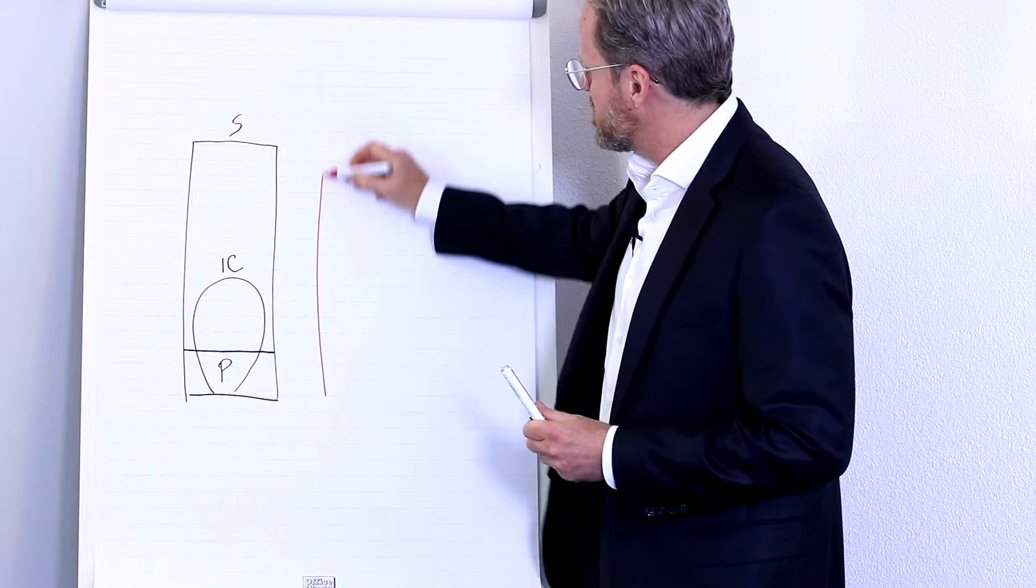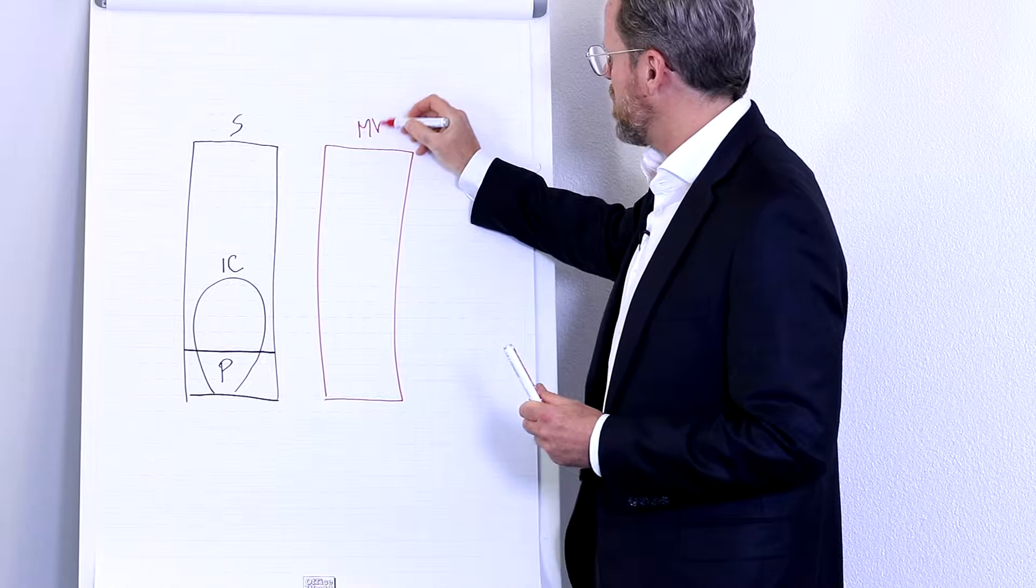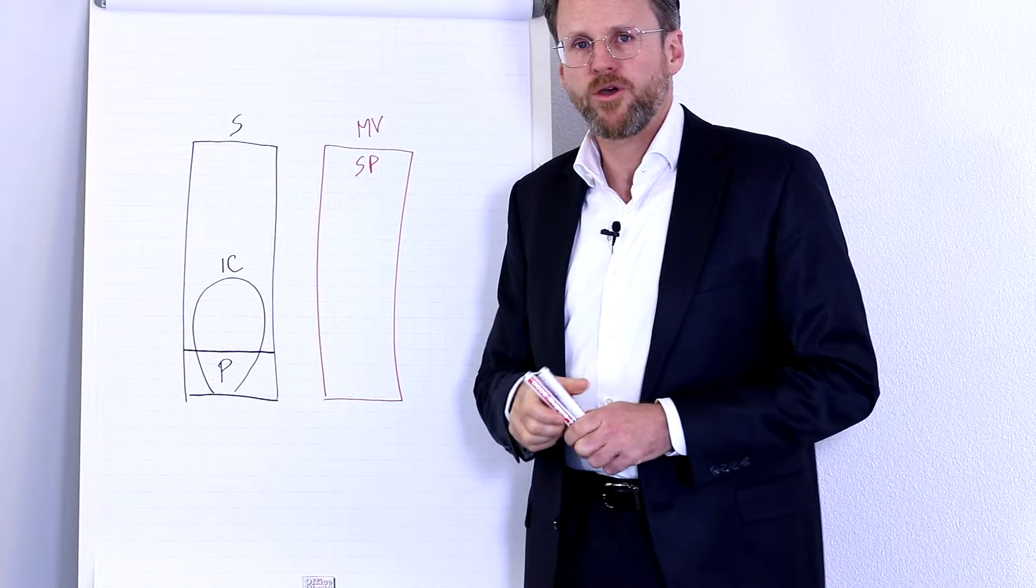And the last indicator of size is the market value. Remember, we put a different bar because this is of a different nature. Market value of a company or the stock price.